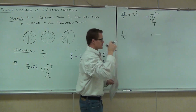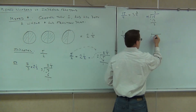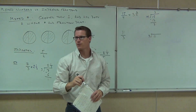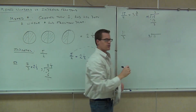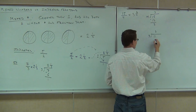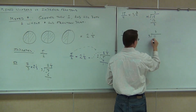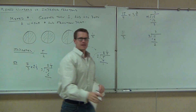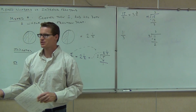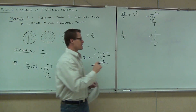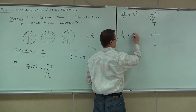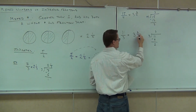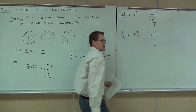Let's try eleven-thirds. On the inside, we'll put eleven; on the outside, we'll put three. Three goes into eleven three times, giving us nine. We subtract to get two. We can't go any further since two is less than three, so two becomes our remainder. We put that as our numerator over three, and we're done.